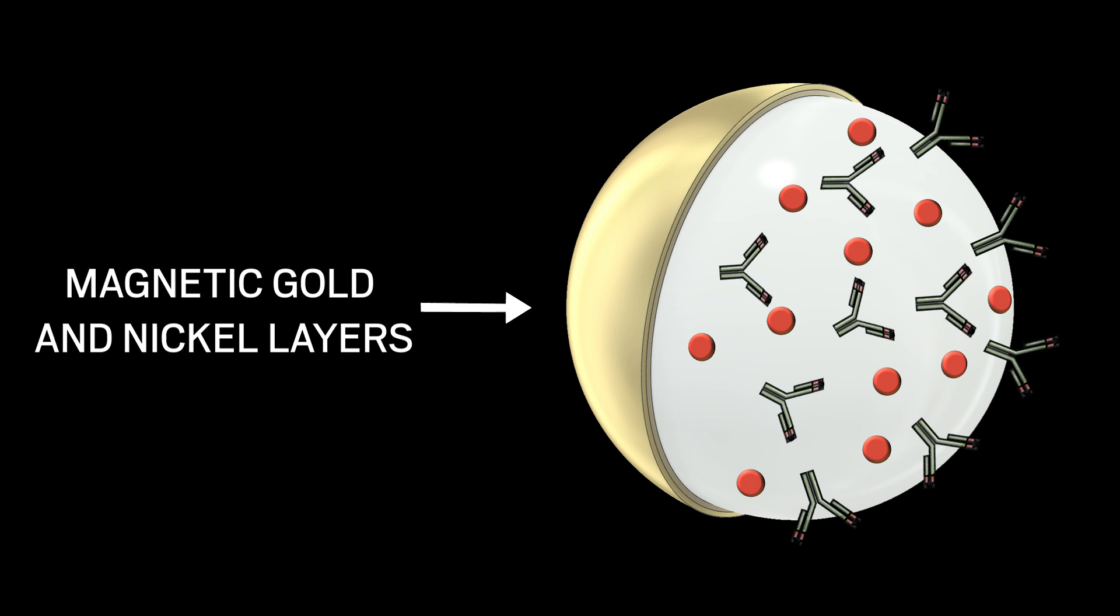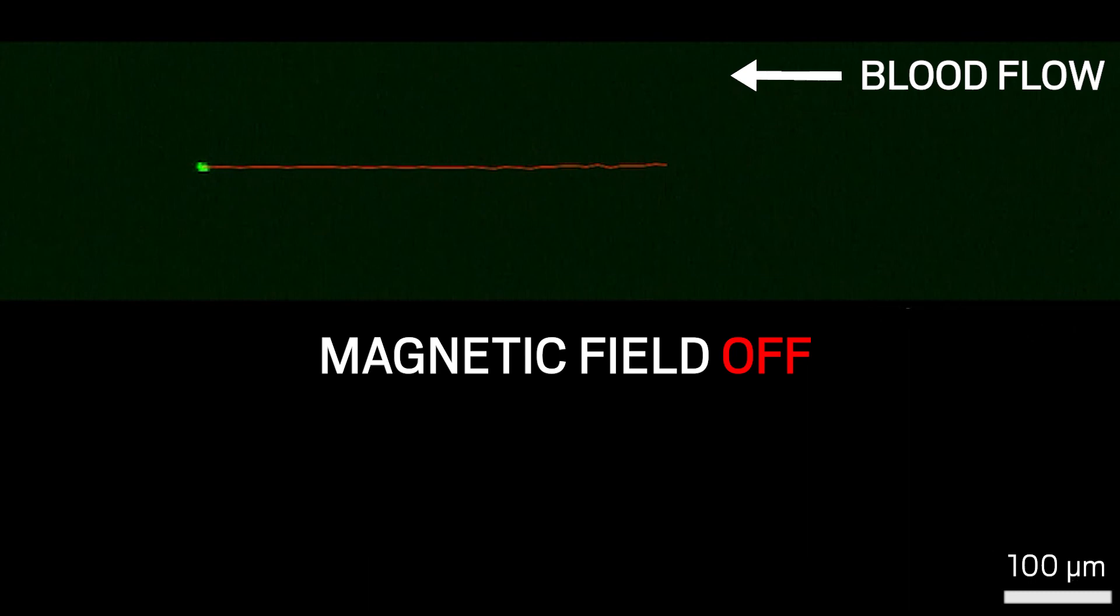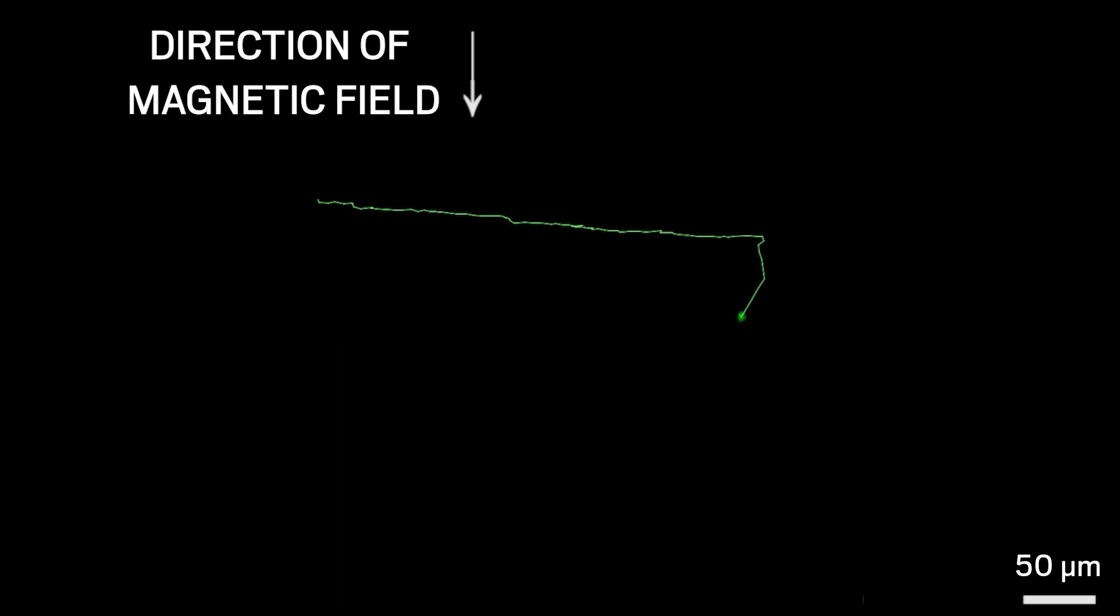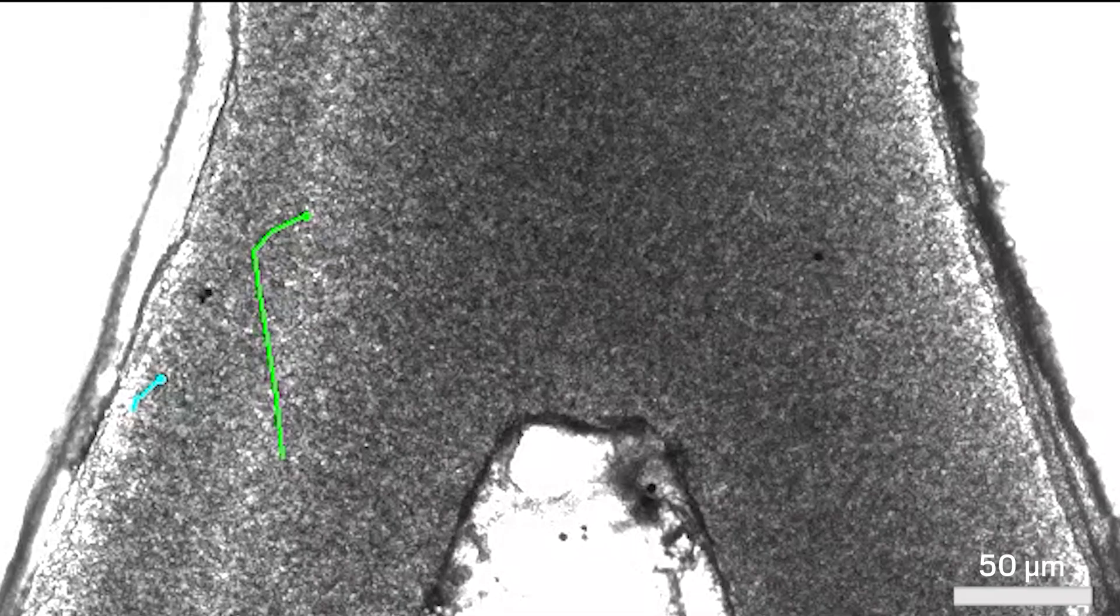By changing the direction of the magnetic field, the team can change the direction of the bot's movement, with speeds up to 600 micrometers per second. The researchers could even steer the bots through junctions, like those the micro-rollers would encounter in an actual circulatory system.